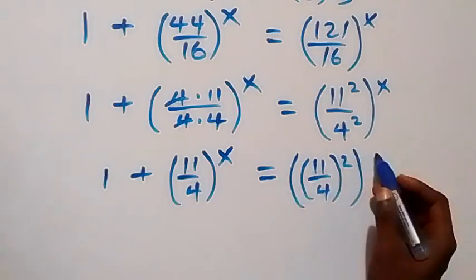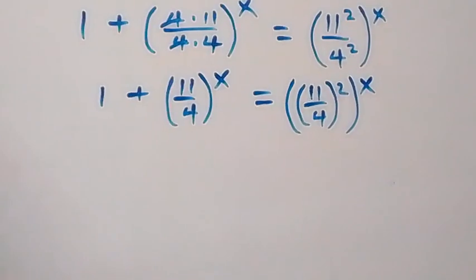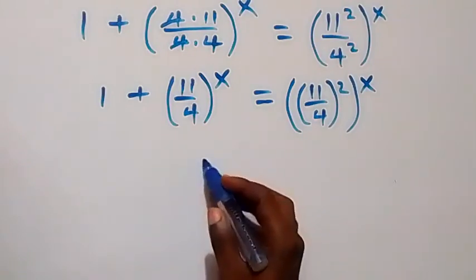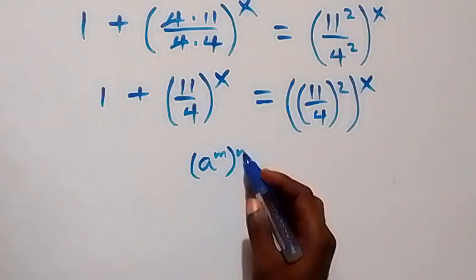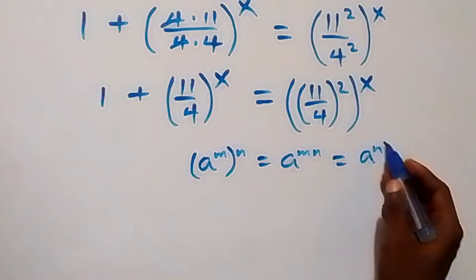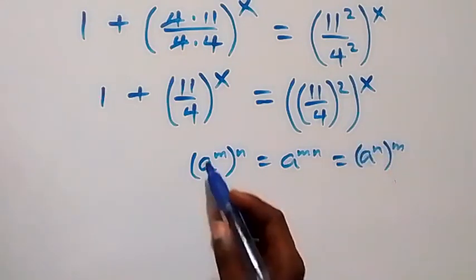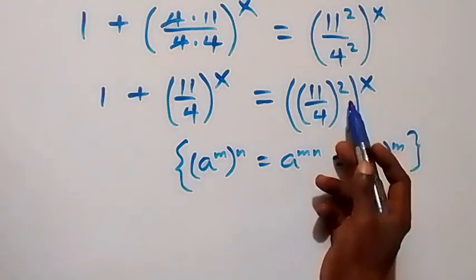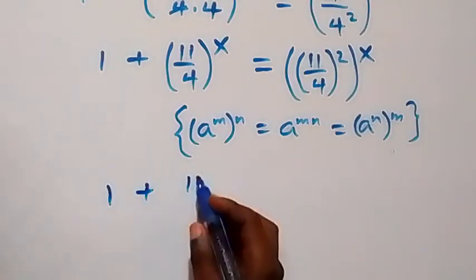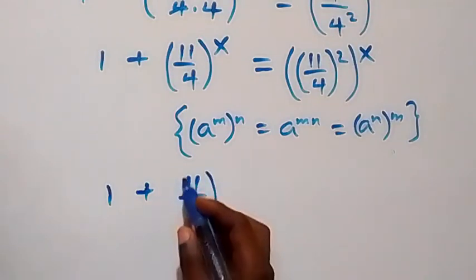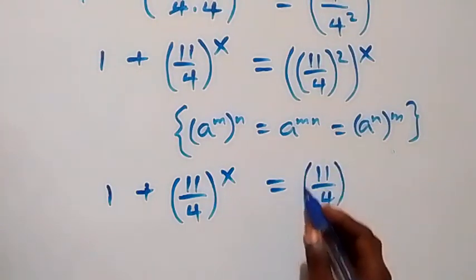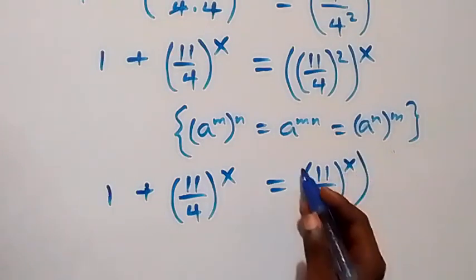From the law of indices, when we have a raised to power m, raised to power n, this is the same as a raised to power mn, which means we can interchange the exponents. So here we have 1 plus 11 over 4 all raised to power x, now equals 11 over 4 all raised to power x, then raised to power 2.